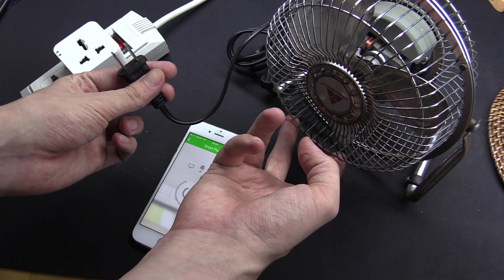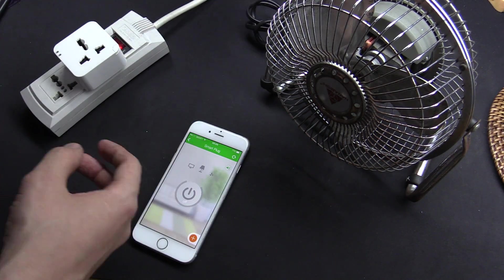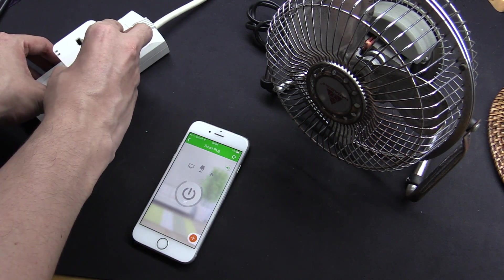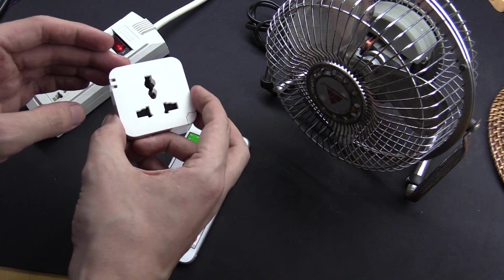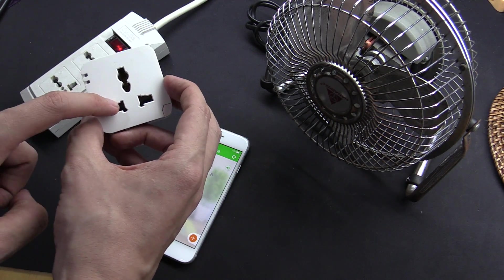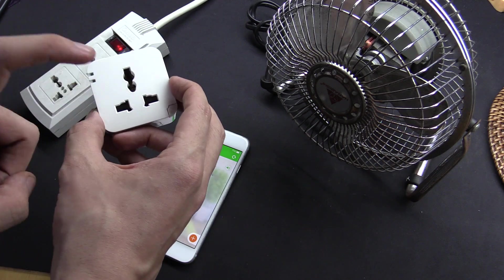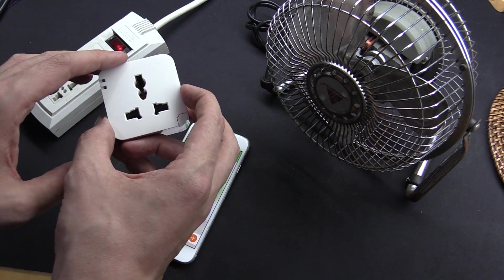So you can see this is just a regular 220 volt AC fan. Now this is something strange about this socket. On the front, it's a universal socket. You can take a British plug, an American plug, pretty much a plug from anywhere in the world, Europe, etc.